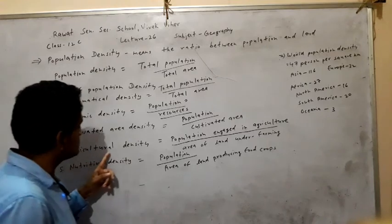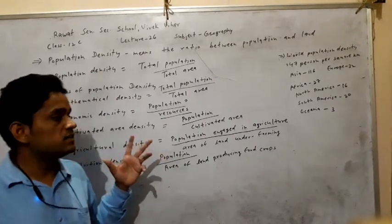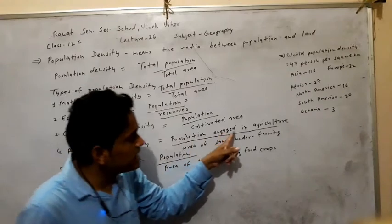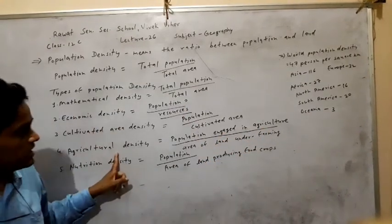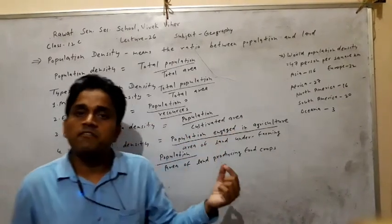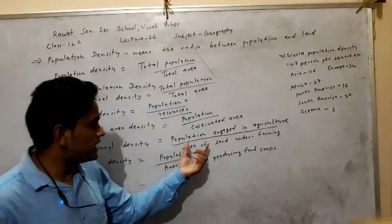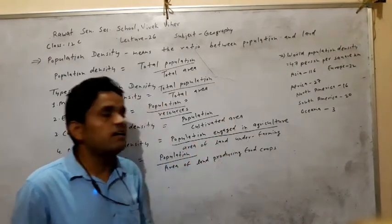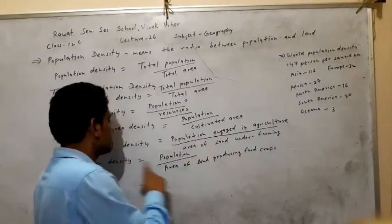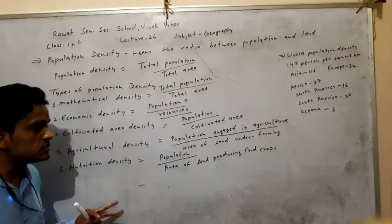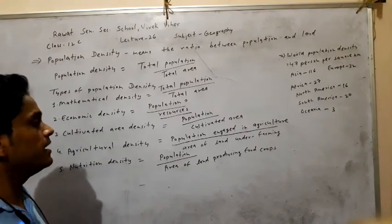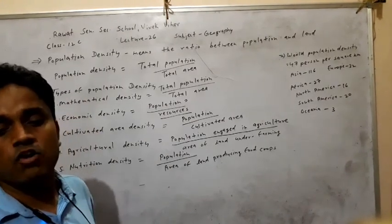Next: agricultural density. Unlike the previous types where total population is counted, in agricultural density only the population engaged in agriculture is counted — in one word, the farmers. The formula is: farmers divided by area of land under farming. Agricultural density is the ratio between population engaged in agriculture and area of land under farming.